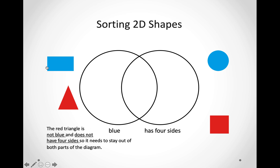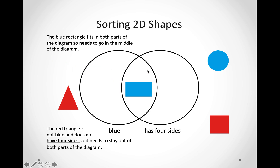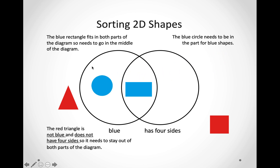Let us try this rectangle over here. Is it blue? Yes. And does it have four sides? Let us count: one, two, three, four. Yes, it does. So, we are going to put it in the middle of the circle because it is blue and it has four sides. Let us look at the circle over here. Is it blue? Yes. Does it have four sides? No. So, we are going to put it into the side that says blue only.